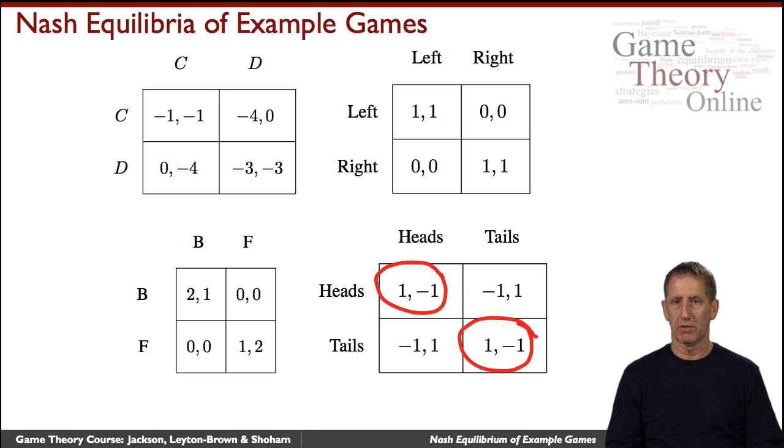What is a pure strategy Nash equilibrium here? Well, let's think about it. Suppose I pick heads. What is your best response? Well, your best response then is to pick tails, because you get one rather than minus one. But if you pick tails, then my best response is now to play tails, because I want to coordinate with you, because then I will get one rather than minus one that I would be getting here.